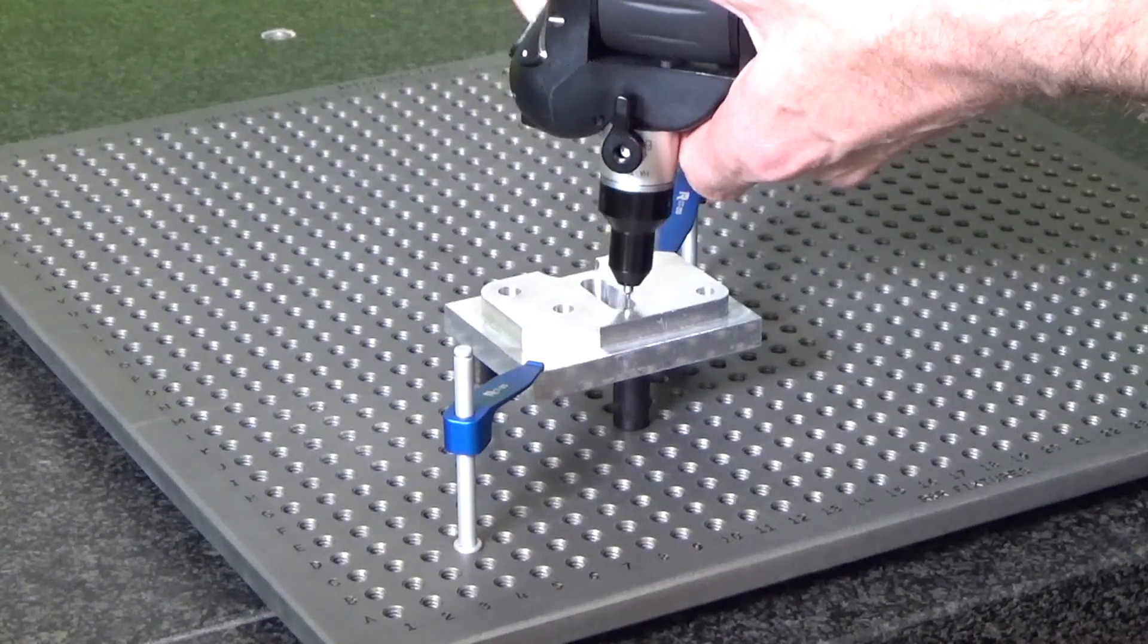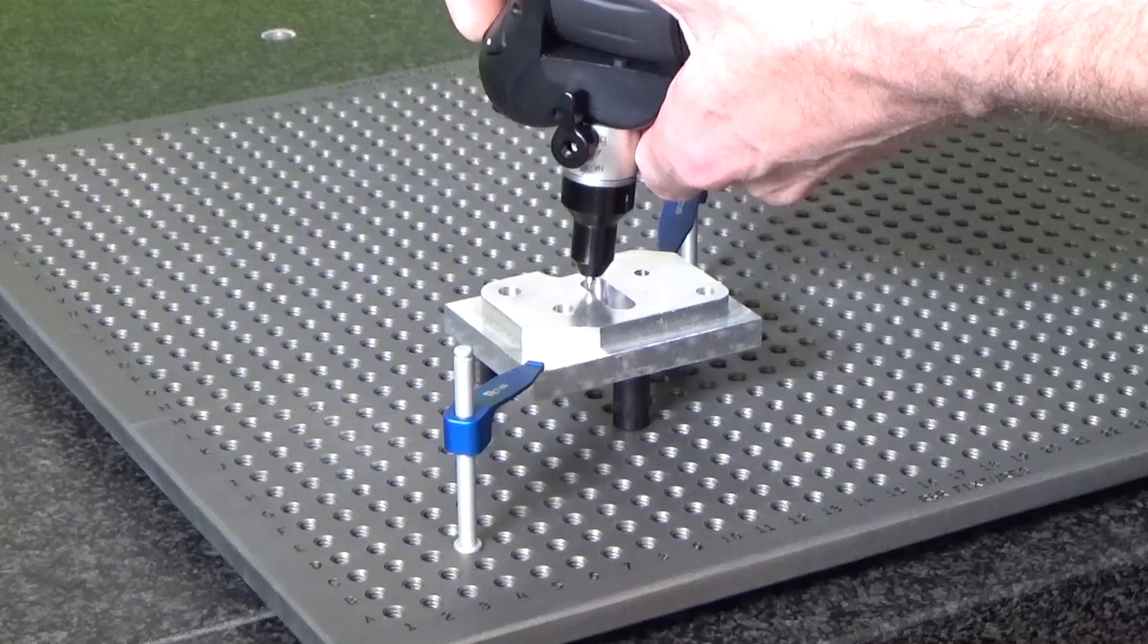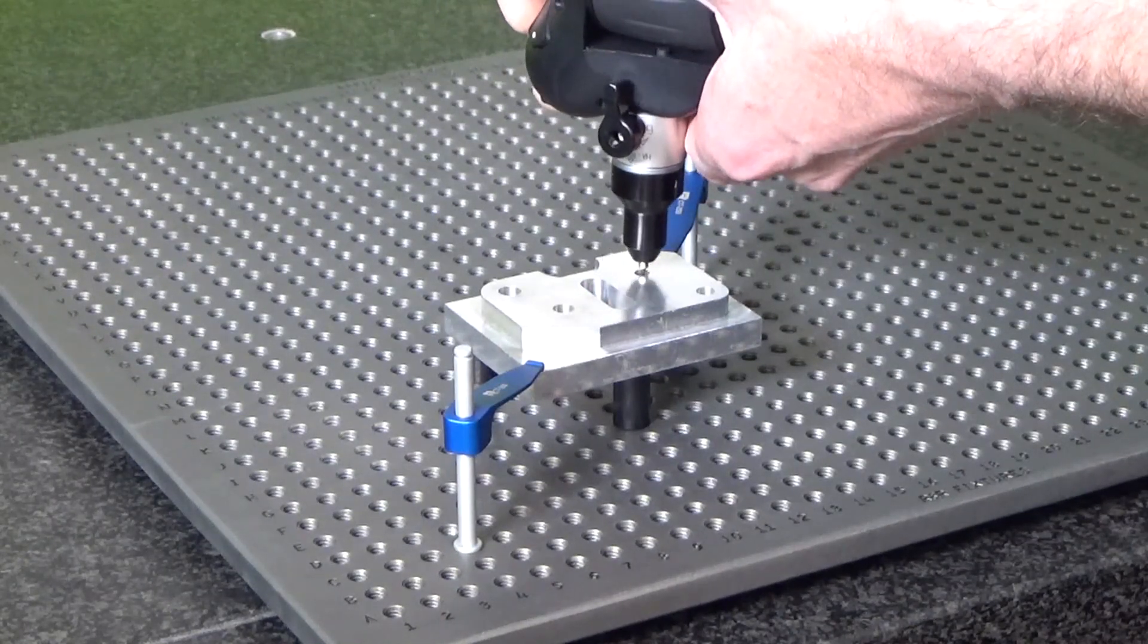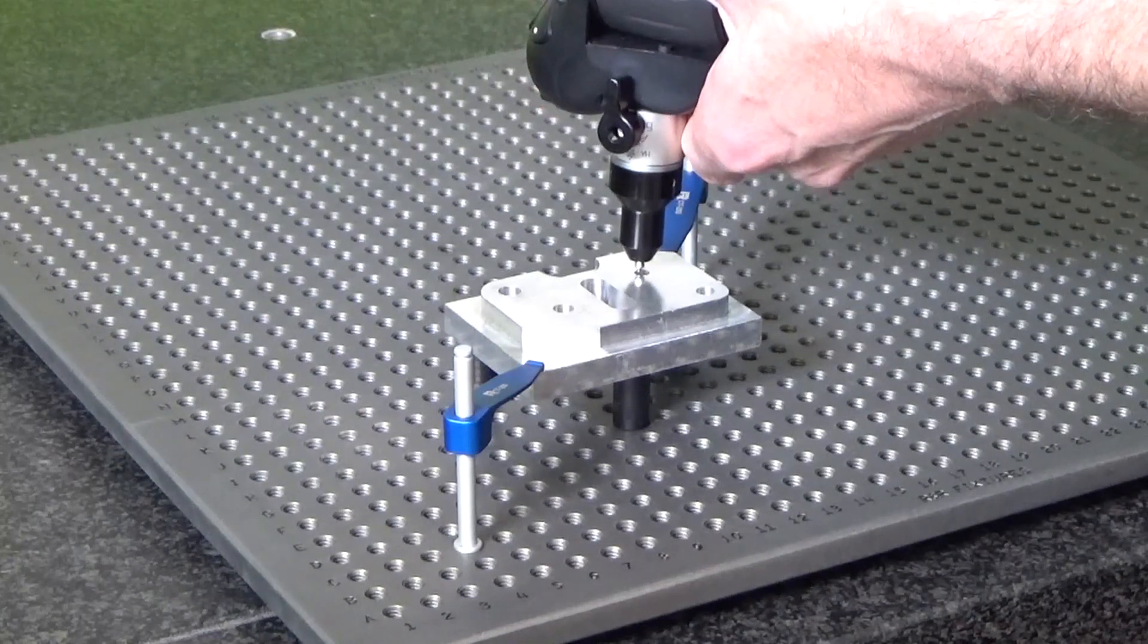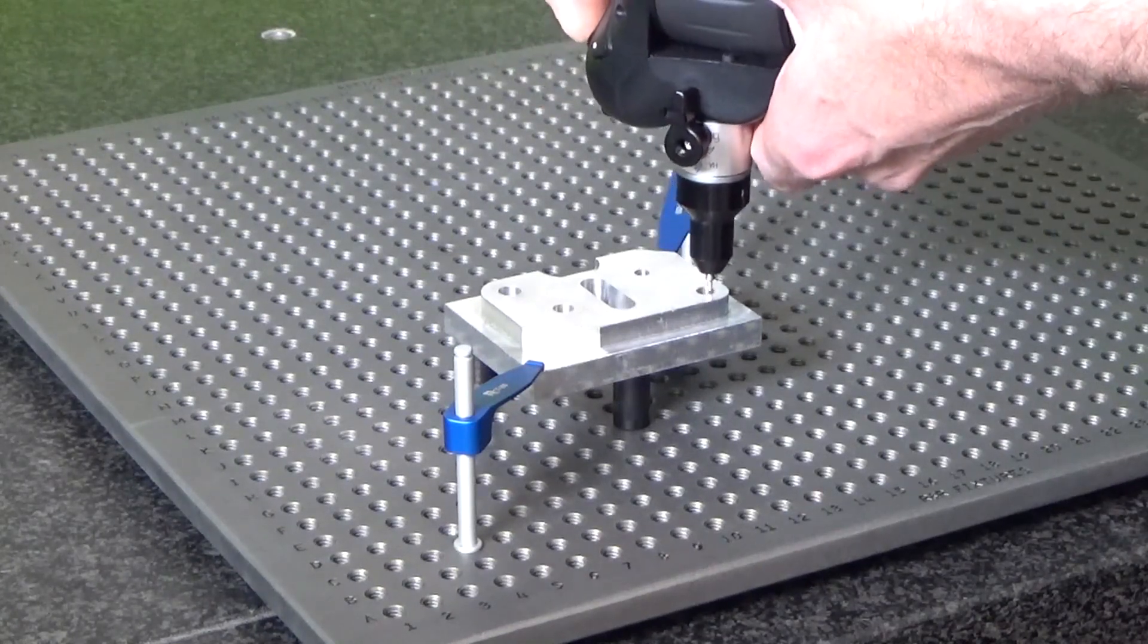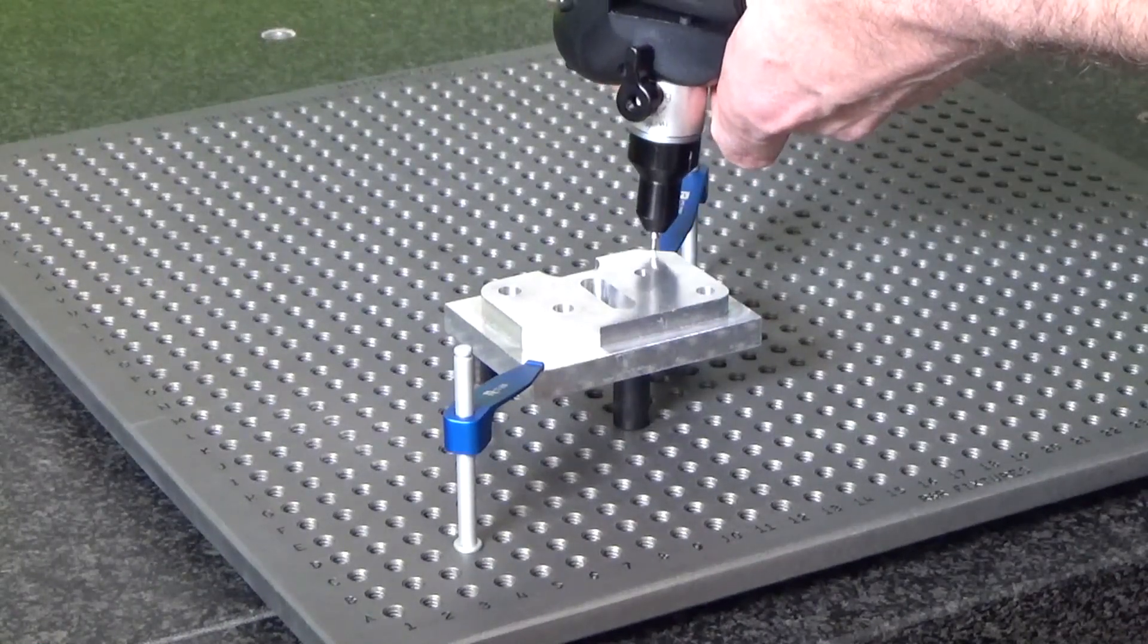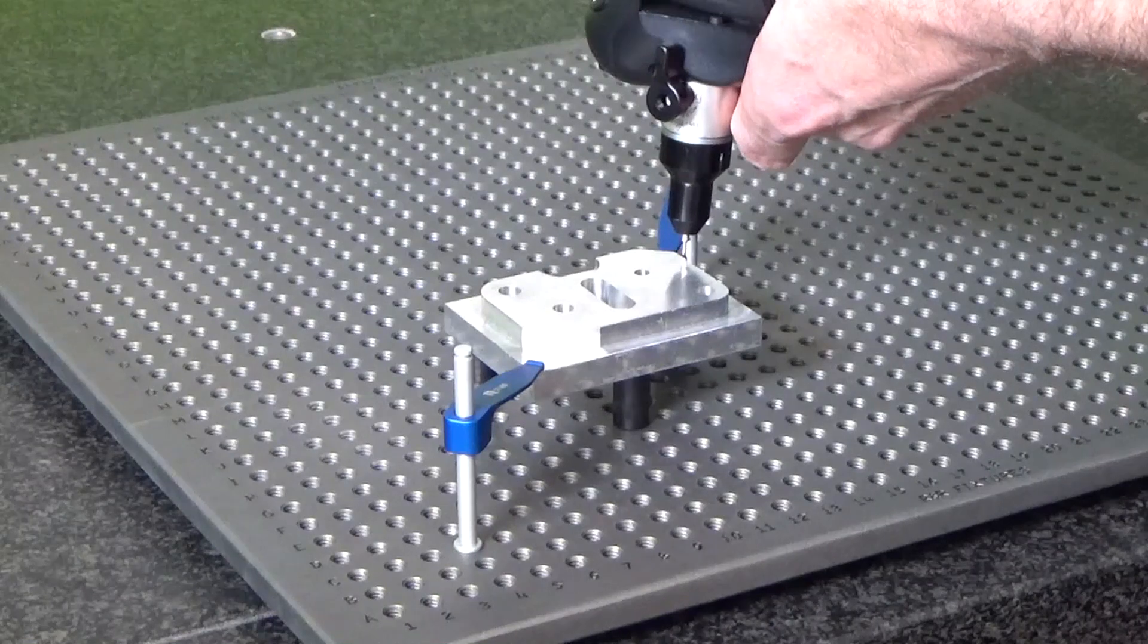So we're measuring the holes, slots, the sides of that slot. Anything the print has dimensions on, we have to make a measurement within. So a measurement in this case is moving the probe around and taking a number of hits on each surface or in each hole.